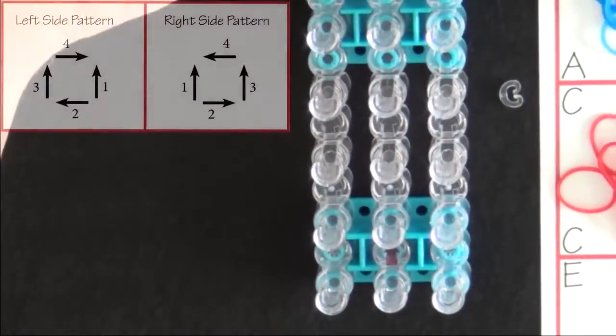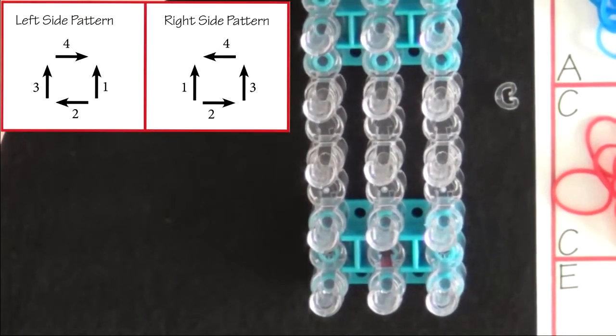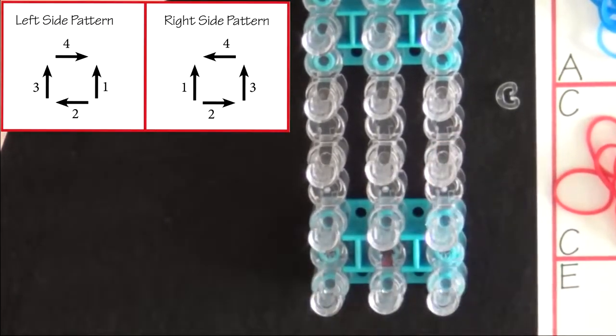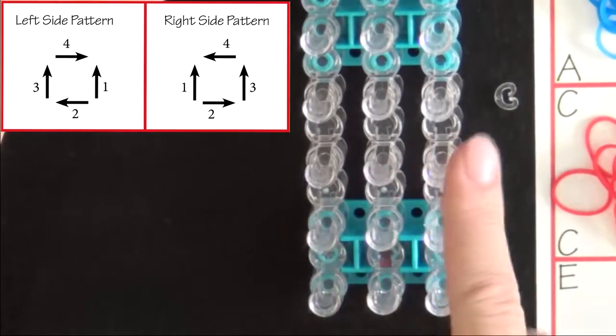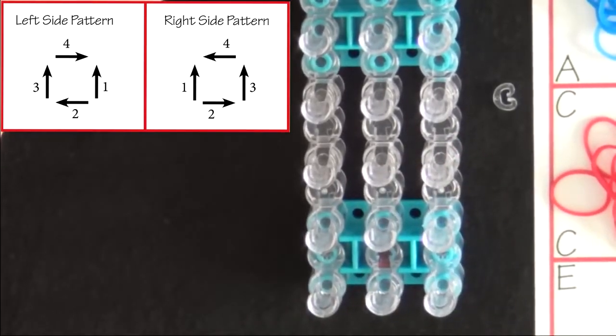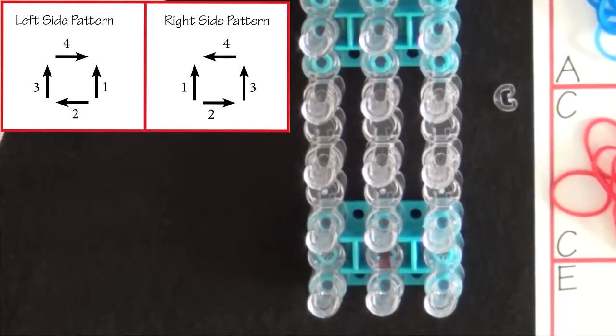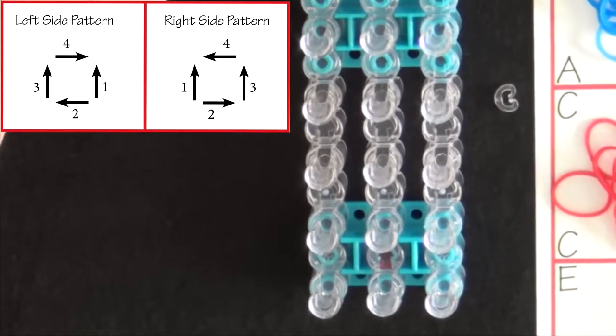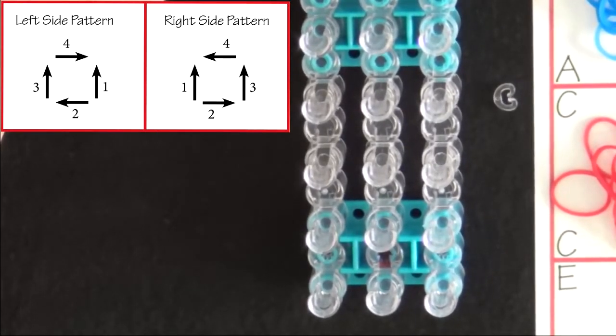The zigzag bracelet is made with a series of squares. The squares alternate from the left side of the loom to the right. The squares on the left side of the loom are placed differently than the squares on the right. The diagram on your screen shows you the order the bands are placed for both left and right sides. Alternate the colors of bands you use for each square from A to B to C.